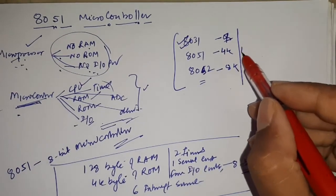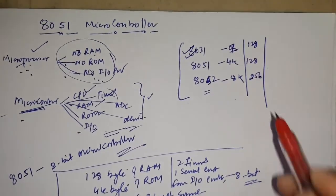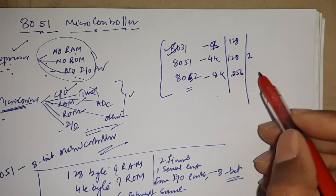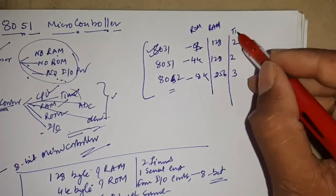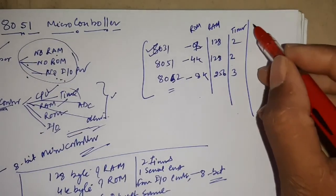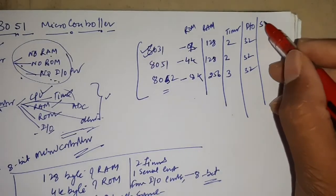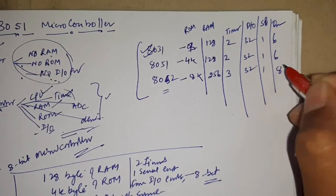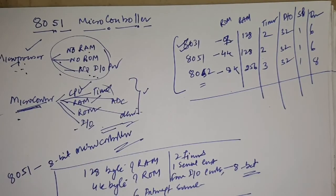If you are talking about RAM: the 8031 has 128 bytes, the 8051 has 128 bytes, and the 8052 has 256 bytes. For timers: the 8031 has 2 timers, the 8051 has 2 timers, and the 8052 has 3 timers. For input/output pins, all three have 32 pins. Every controller has one serial port. For interrupt sources: the 8031 has 6, the 8051 has 6, and the 8052 has 8. This is the basic difference between these three microcontrollers — 8031, 8051, and 8052.